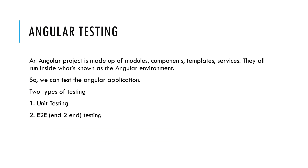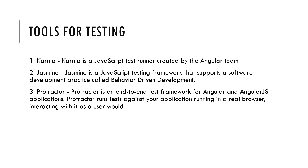So what are the different types of testing we can do in Angular? An Angular project is made of modules, components, templates, and services, all running inside what is known as the Angular environment. We can test an Angular application in two ways: unit testing or end-to-end testing. The tools for testing include Karma for unit testing, Jasmine, and Protractor.